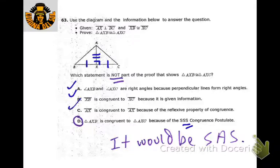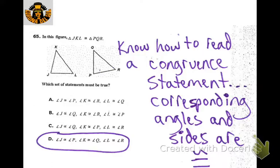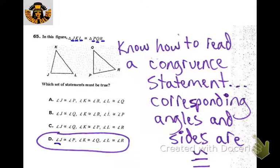For this one, we'd be able to do side-angle-side by utilizing vertical angles being congruent. Make sure you know how to read a congruence statement — everything has to match up: J goes with P, K goes with Q, L goes with R, so angle J corresponds to angle P.